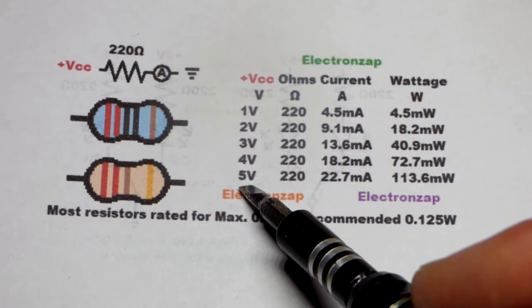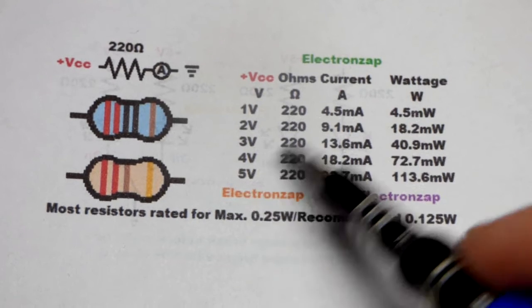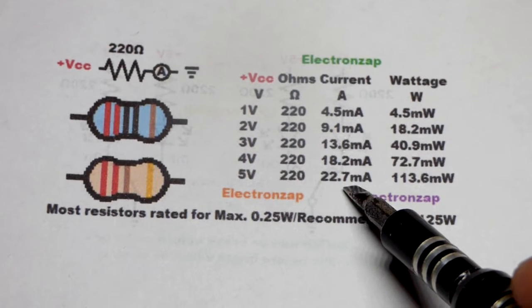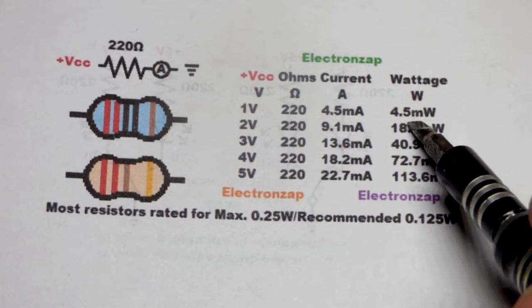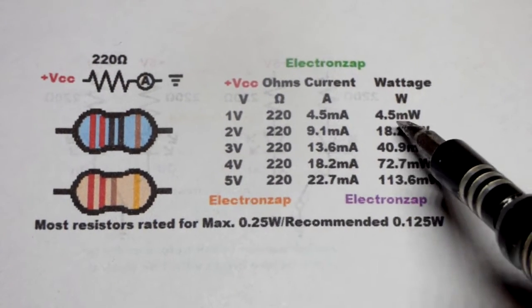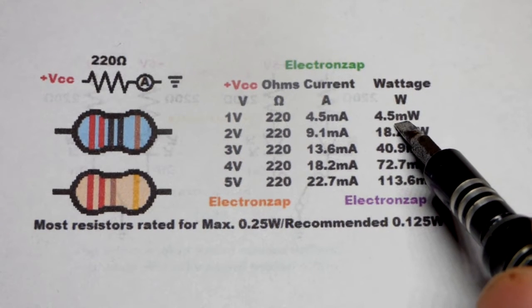If you raise the voltage by a certain amount, it's going to be that many times as much current. Really straightforward. When it comes to wattage though, it gets more complex. So here you can see 1 volt is very very low wattage, right there.